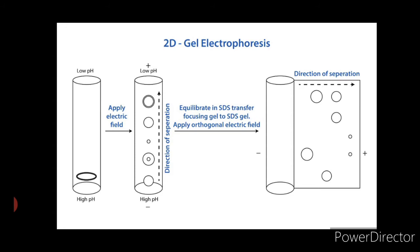The first dimension separation in 2D electrophoresis is usually isoelectric focusing, which is also called IEF, in which the proteins are separated on the basis of their net charge irrespective of their mass.